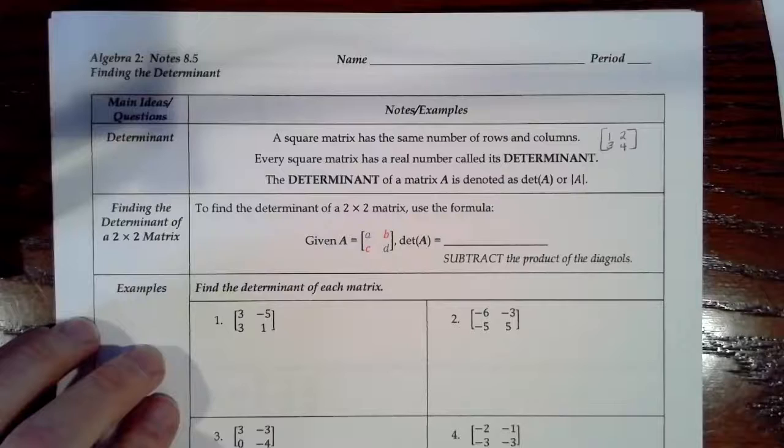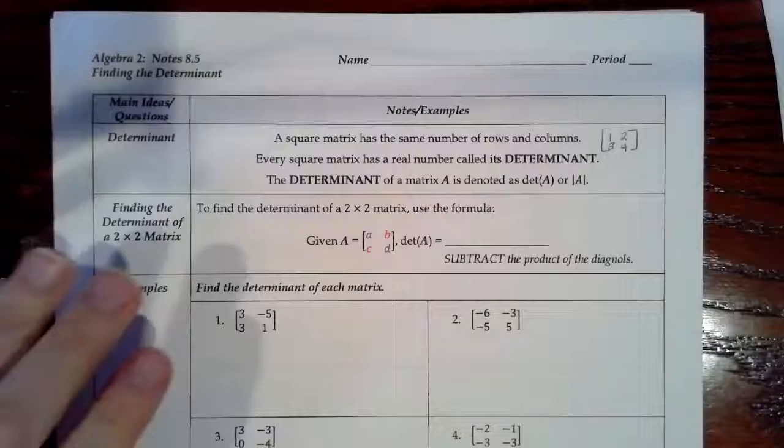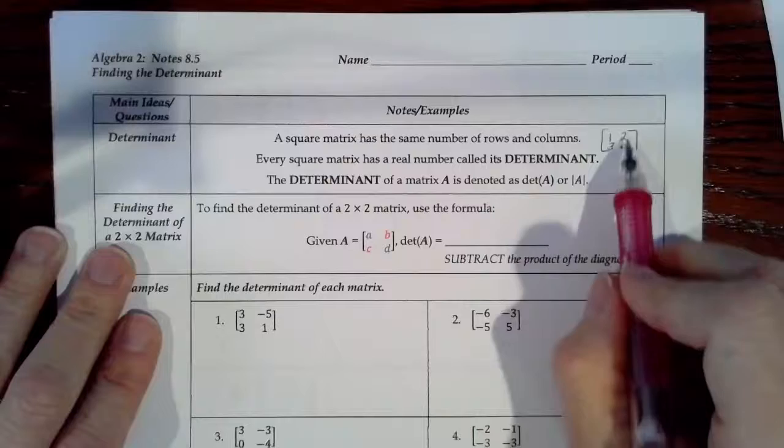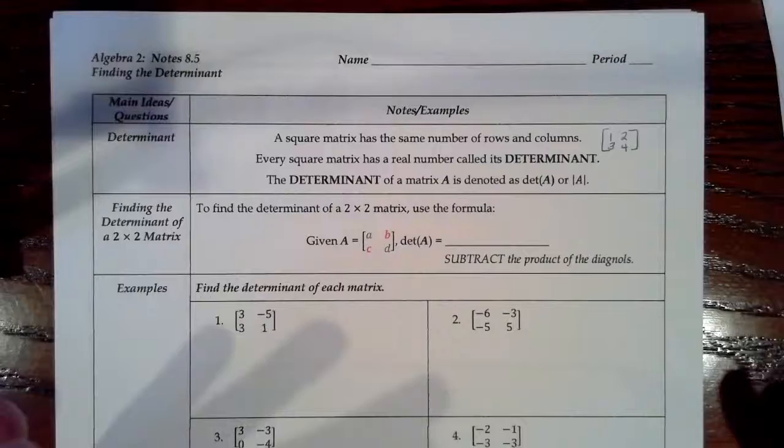This is the supplemental video for notes 8.5, finding the determinant. Let's talk about square matrices for a moment. A square matrix has the same number of rows and columns. For example, I've got two rows and two columns, so this is a 2 by 2 matrix - that's an example of a square matrix.